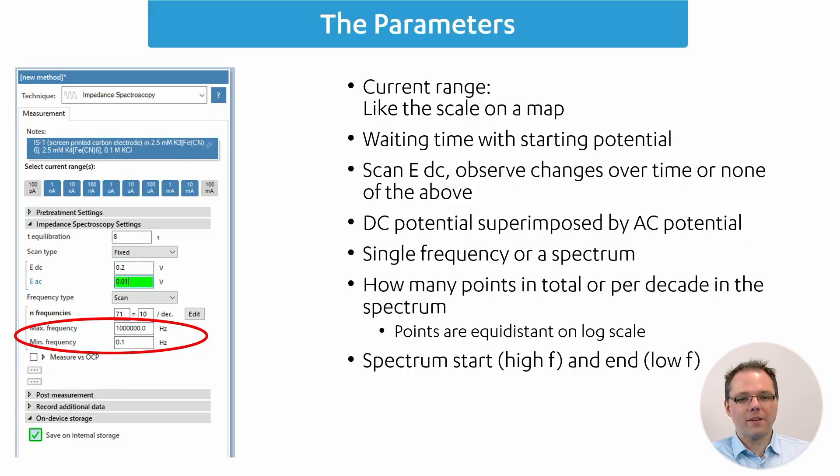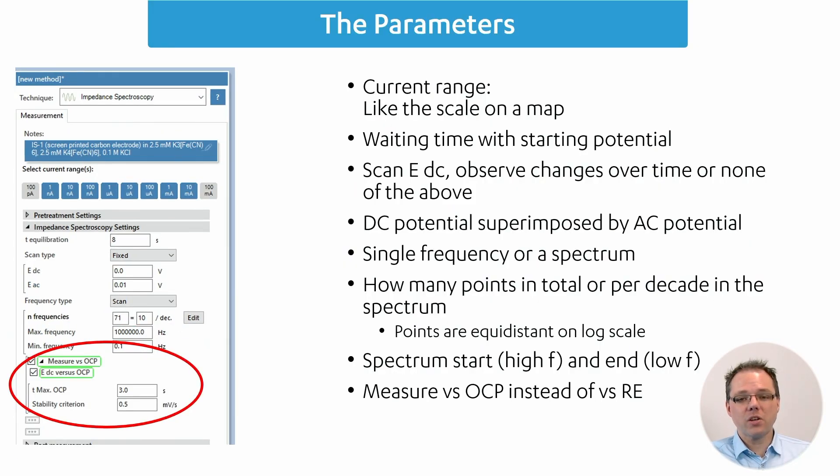The last option that we have in the standard is measure versus OCP. This makes the difference if you want to measure where the potentials you put into the software are usually versus the reference electrode. If you now choose the option measure versus OCP and EDC versus OCP, that means if you set a zero in the EDC window, your measurement will be performed at the OCP, the open circuit potential.